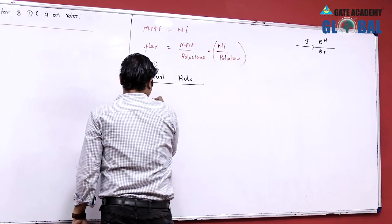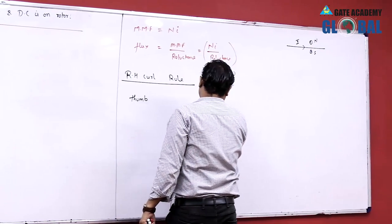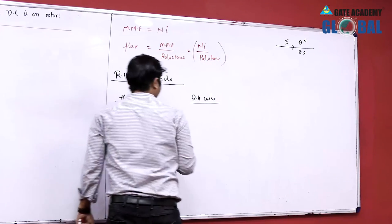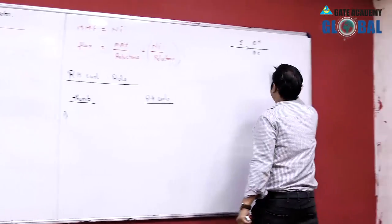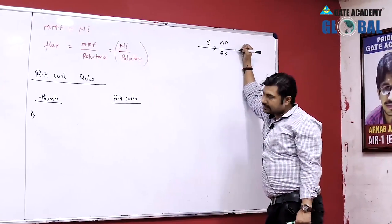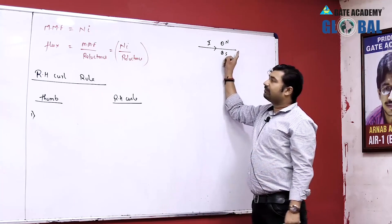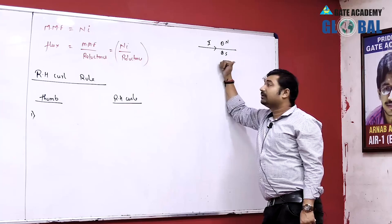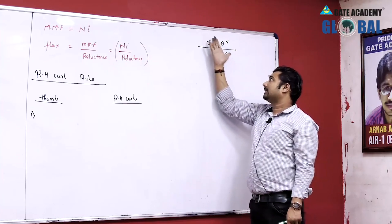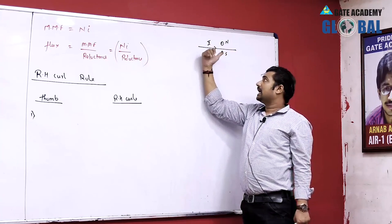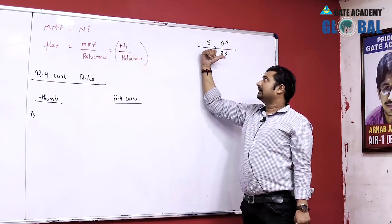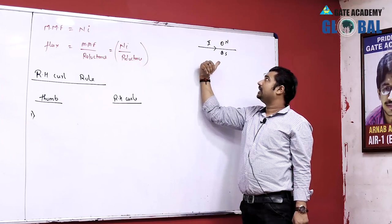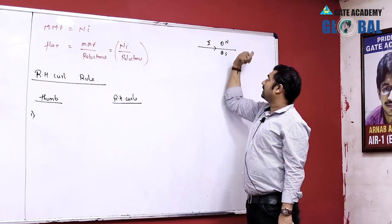In the right-hand grip rule, if the direction of current is represented by the thumb, then the right-hand curl represents the direction of the magnetic field. If the current in a wire is flowing in the direction of the curl, then the thumb will represent the polarity of the magnet. Field is coming out from the north and going into the south.